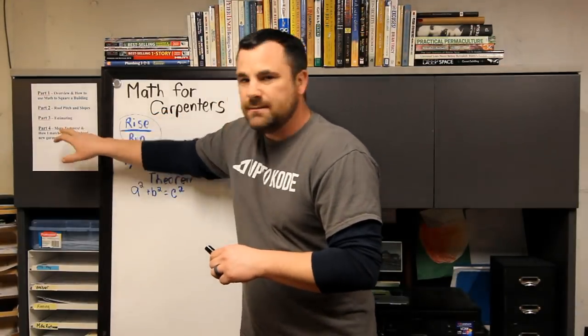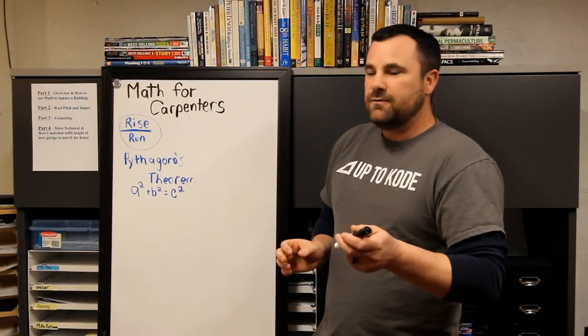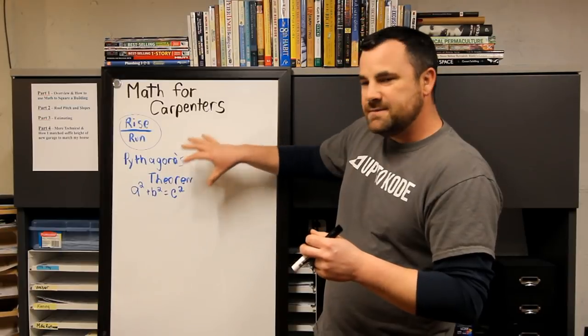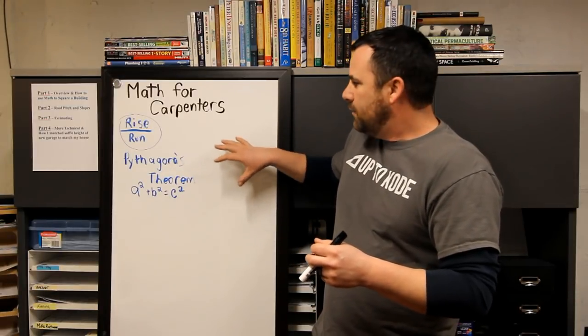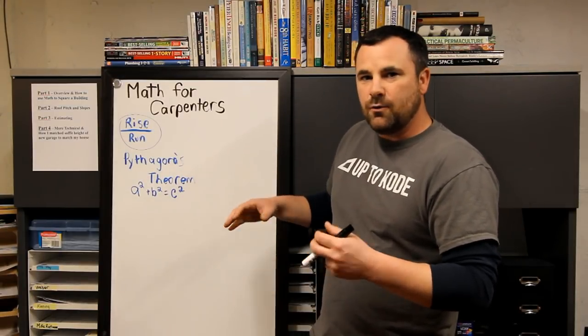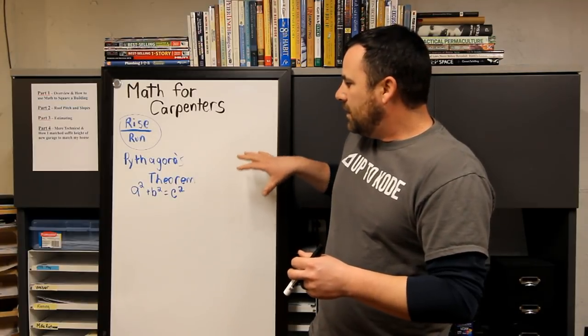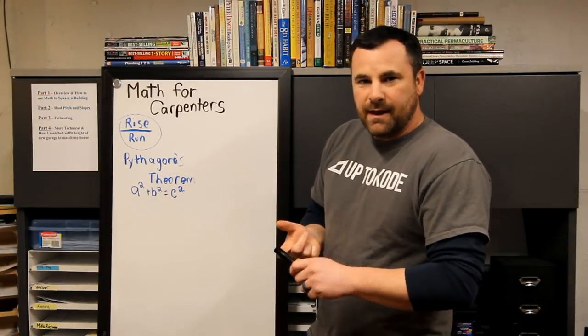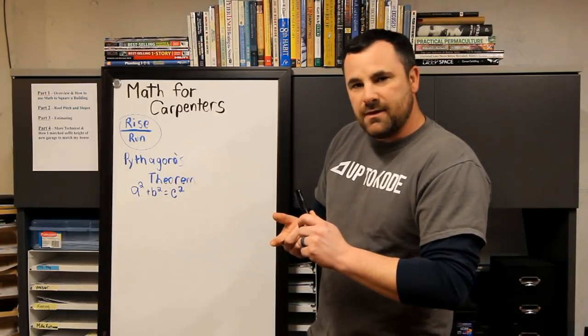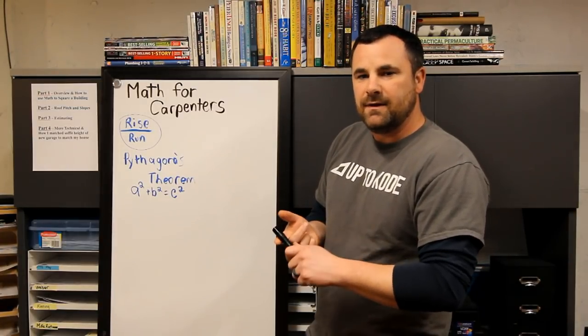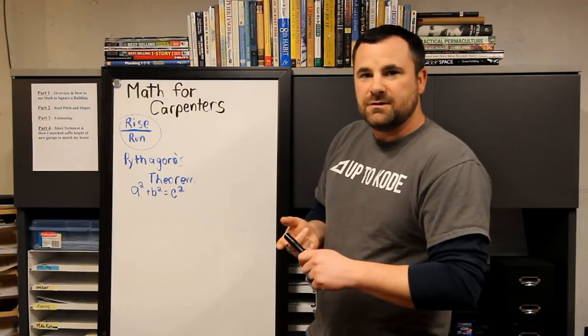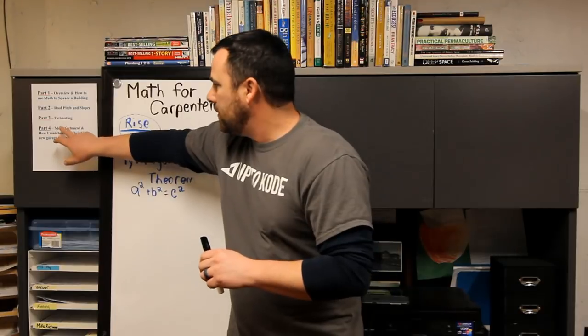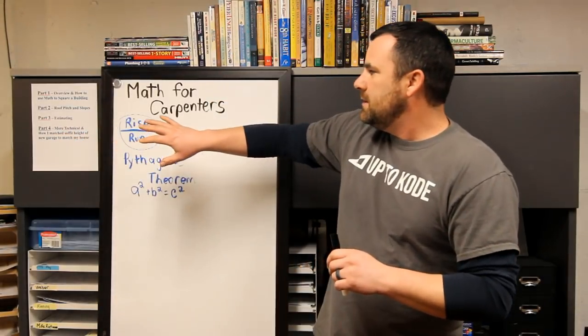Number three is estimating, so this will be a good one to stay tuned for. I'll go through the steps that I use when I do an estimation on a job. I'll use a gable end house and be able to figure out the area of the gable end, the area of the wall, the length of the soffit fascia that I need, and even how much shingles I need or how much roofing material.